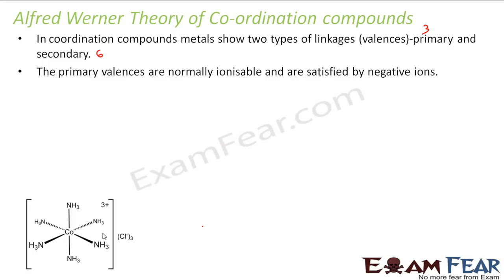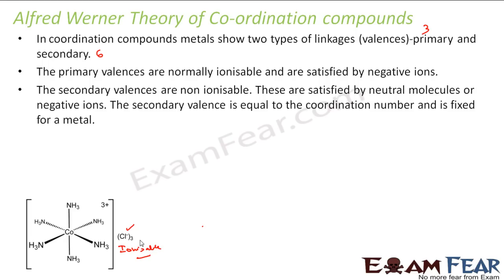Werner also stated that primary valencies are normally ionizable and are typically satisfied by negative ions. Secondary valencies are non-ionizable and are satisfied by neutral molecules or negative ions — they cannot be positive. These are called ligands, and they will be either neutral or negative. The secondary valency equals the coordination number, and it is fixed for a given metal — for example, cobalt will always be 6.